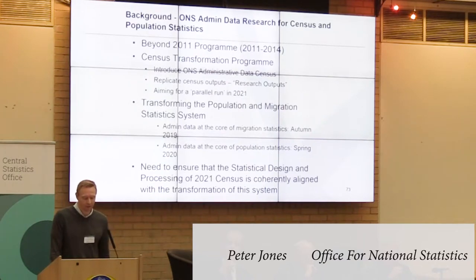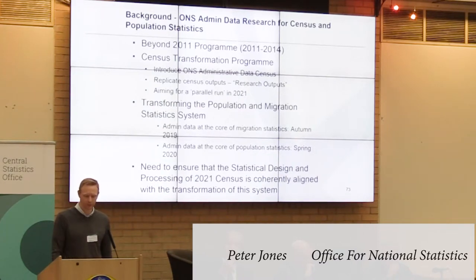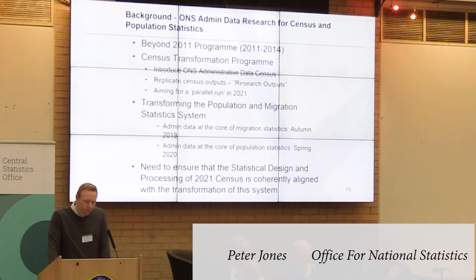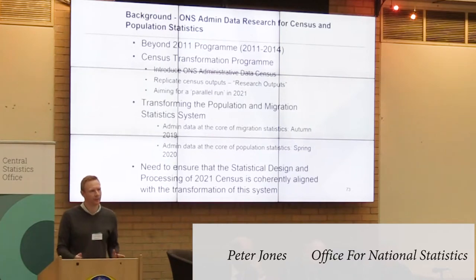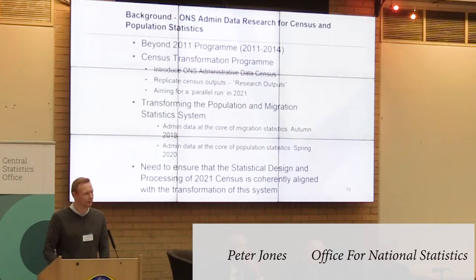What we were aiming for was a parallel run in 2021 — delivering the online census using a fairly traditional approach similar to 2011, but also running an admin data census and benchmarking the two together. We don't think we'll be able to run that now. There are too many resource constraints and logistics challenges around running multiple surveys to support the admin data at the same time as the census, so we're now looking towards 2022 for the transition to an admin-based approach.